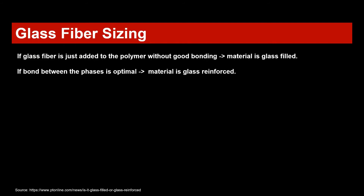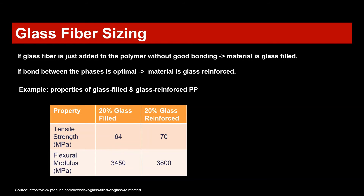Another interesting example is polypropylene. I have here a property table with 20% glass filled and 20% glass reinforced, where you can immediately see the improvement in tensile strength. In the past it was only glass filled because polypropylene is a non-polar polymer and nothing sticks to it, including the glass fibers.